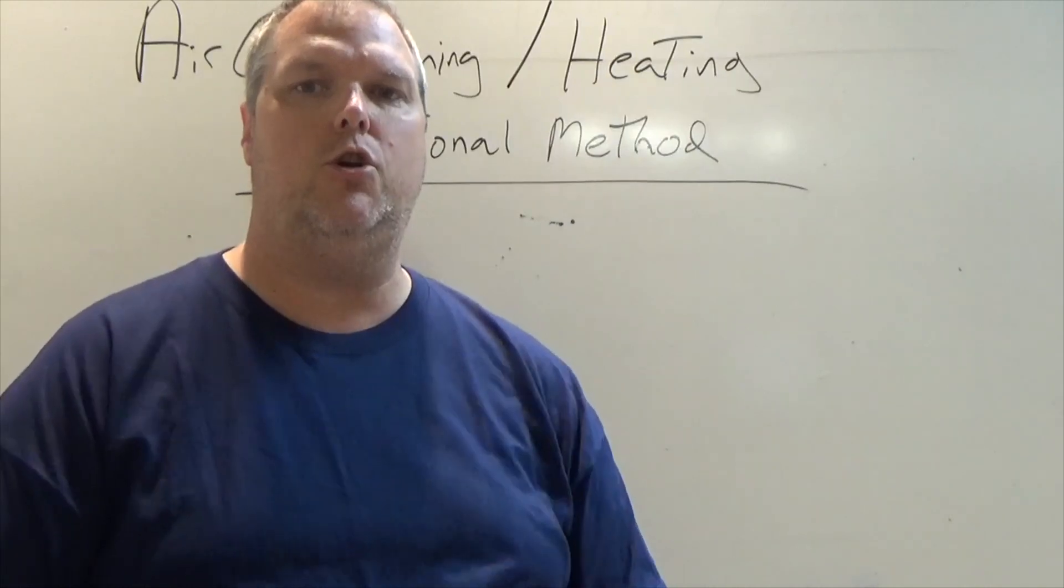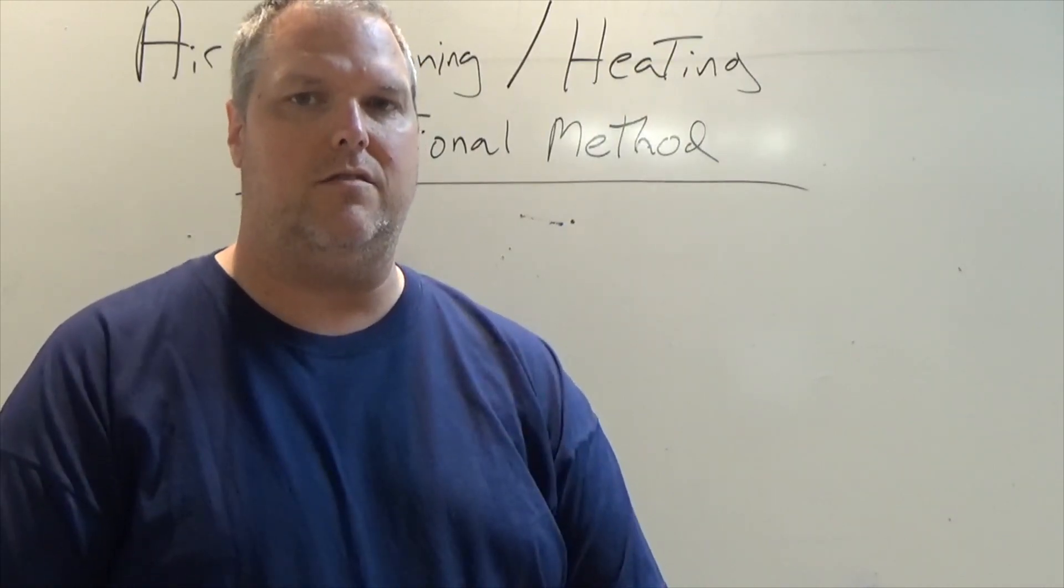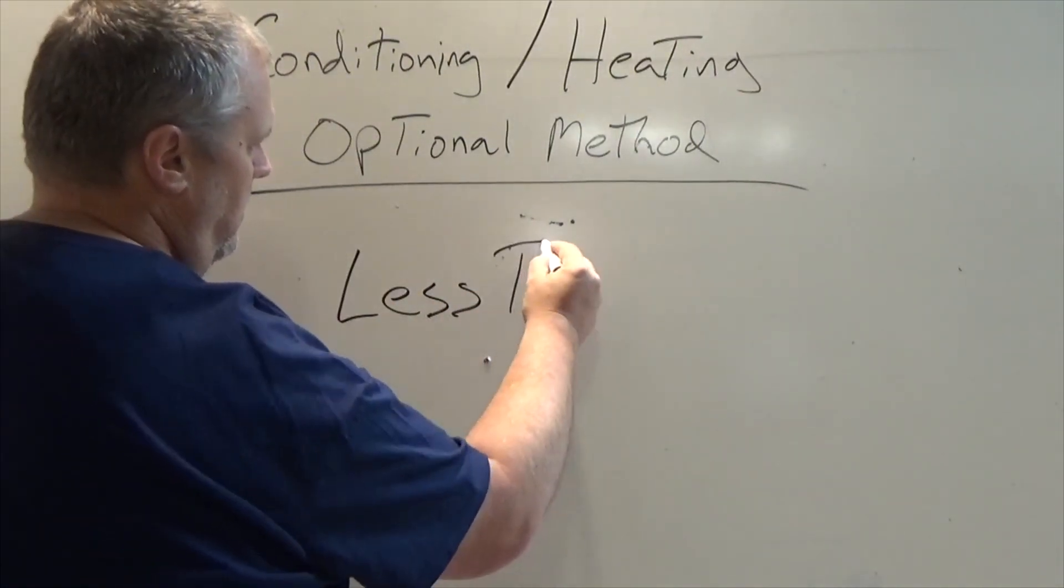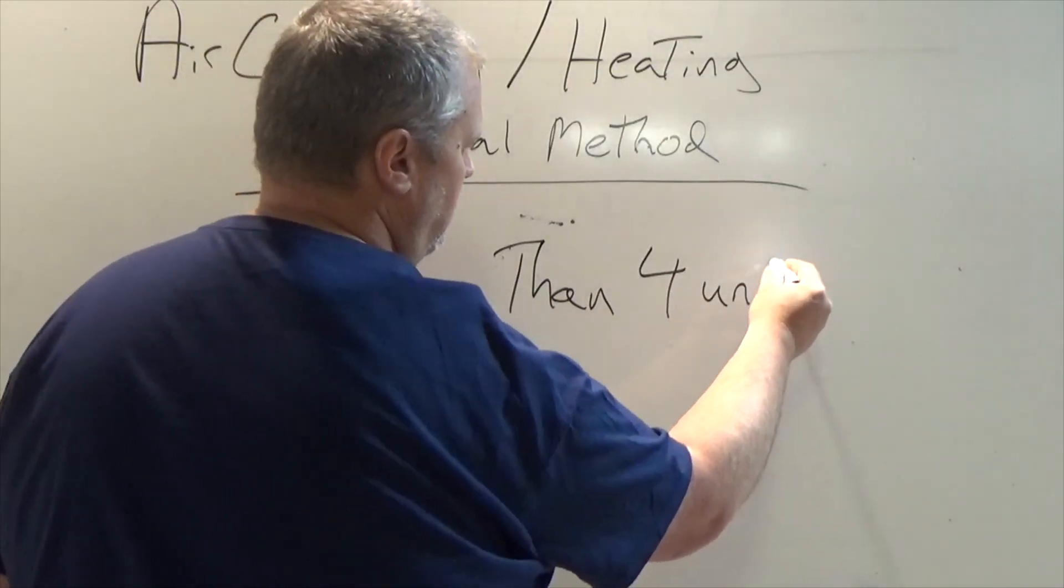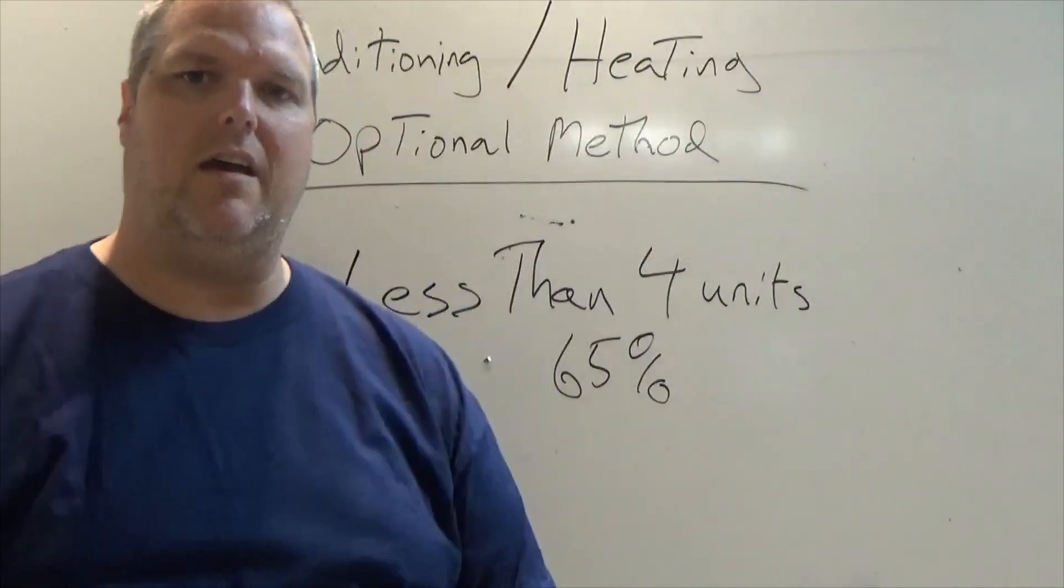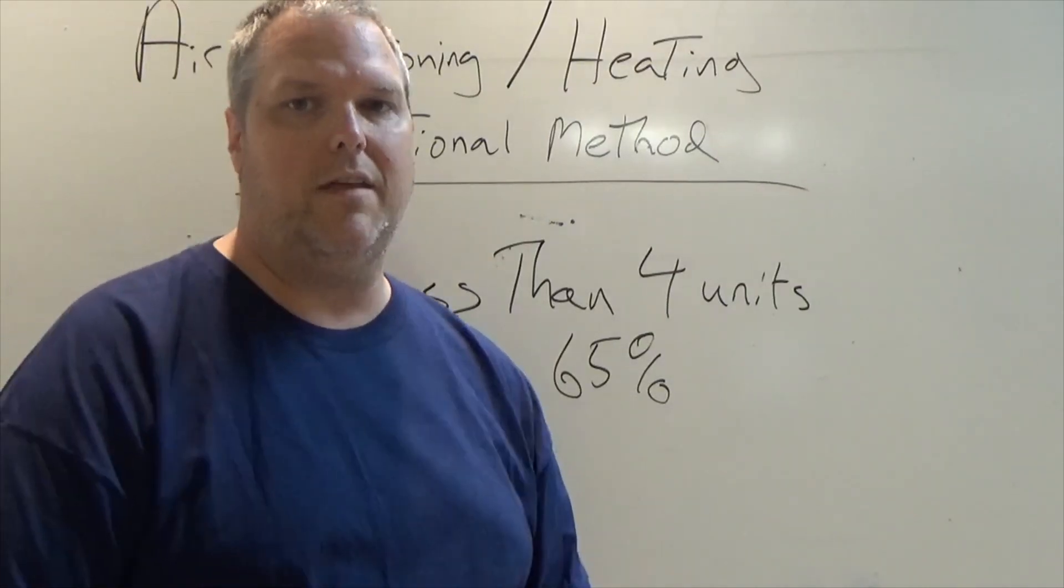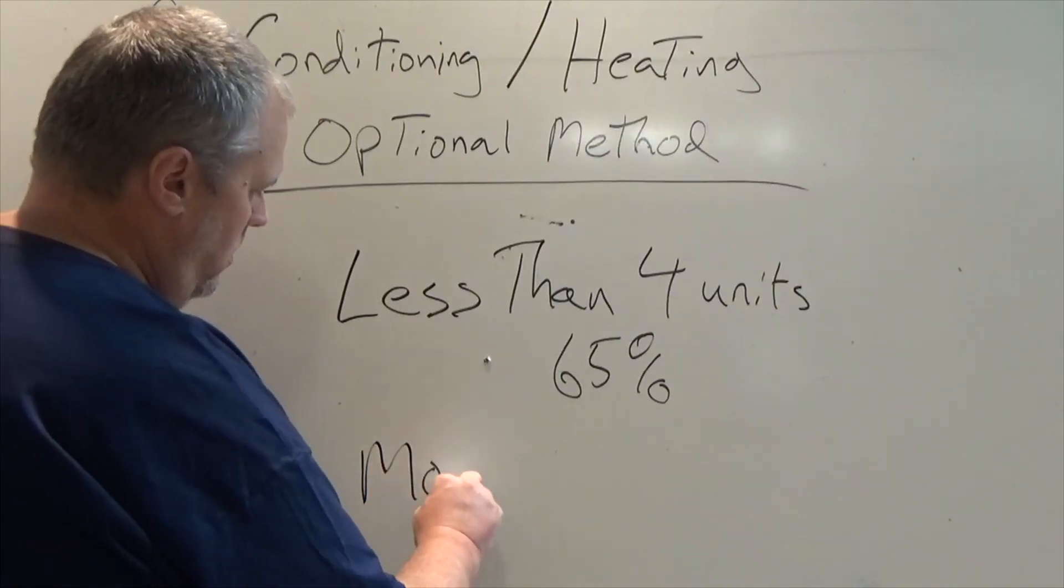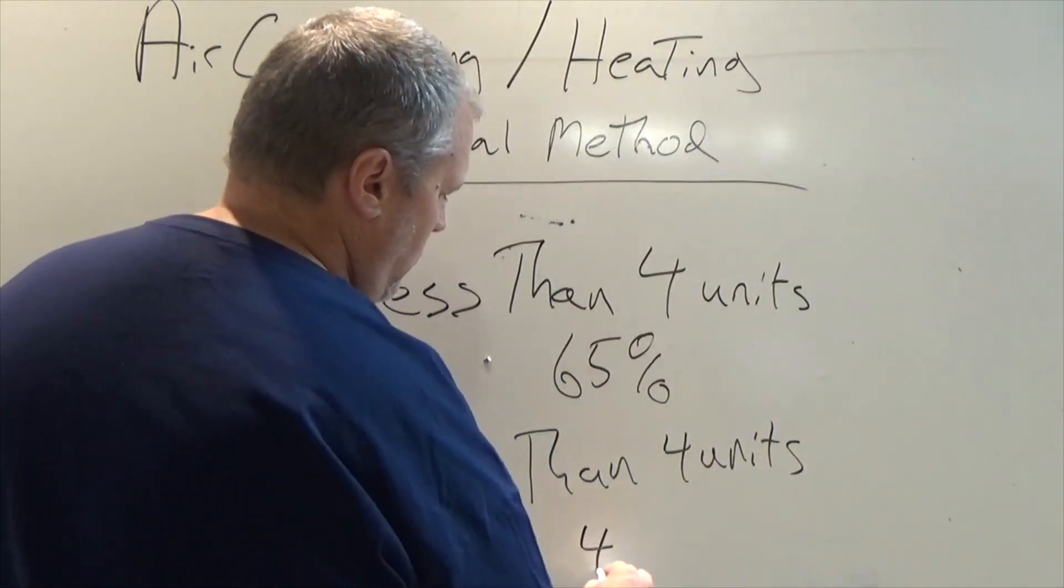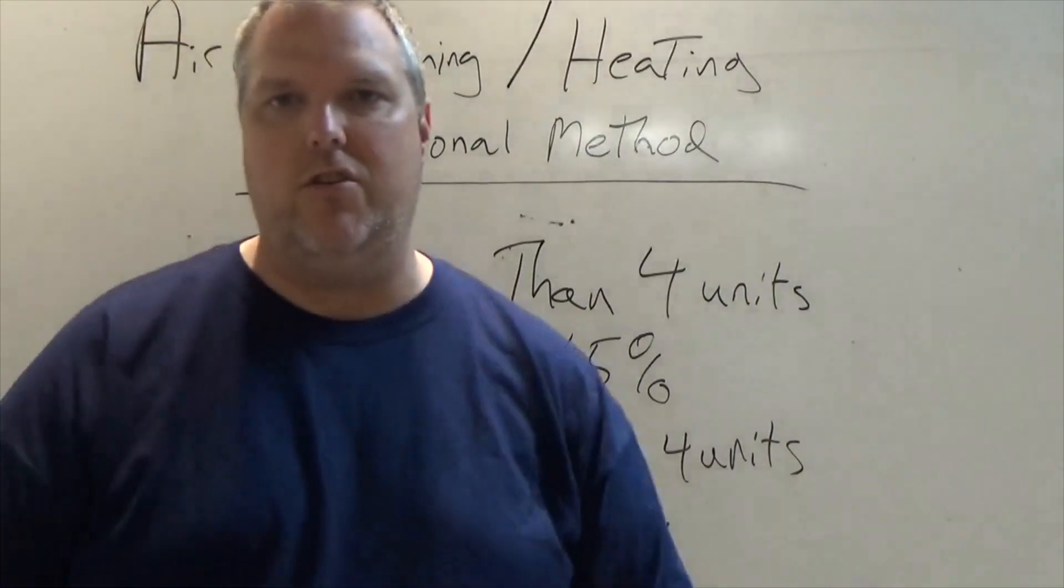There's five different sections that cover heat and they're going to require different demand loads. What we're going to do is discuss the two main calculations that we're going to use, the demand percentages. It's kind of set up like this. If I have electric heat, if I have less than four units, I'm going to take it at 65%. If I have four units or less, I take it at 65%. Now, if I have more than four units, I'm going to take it at 40%.